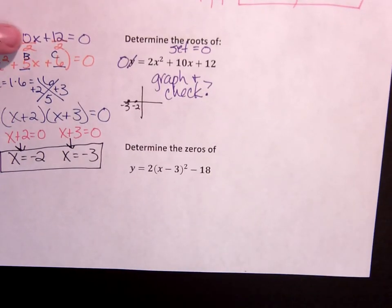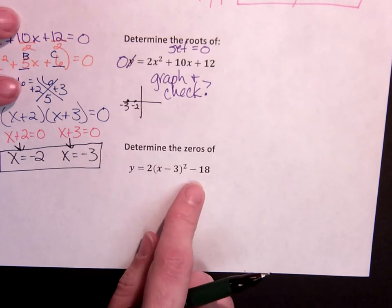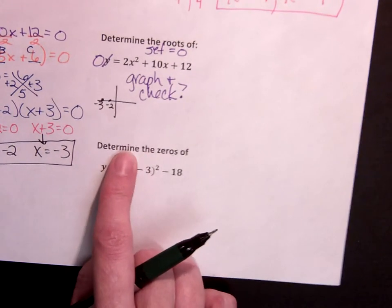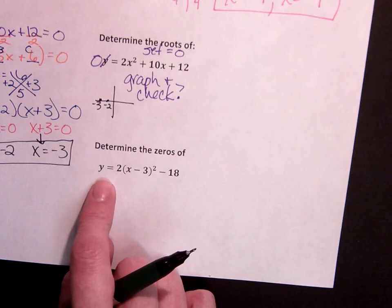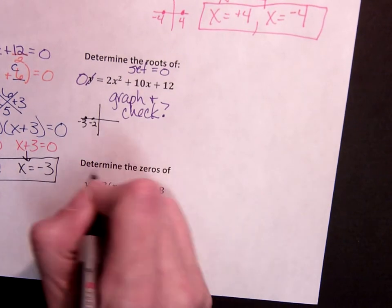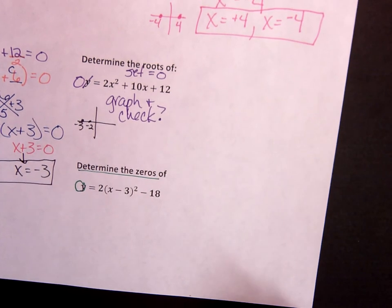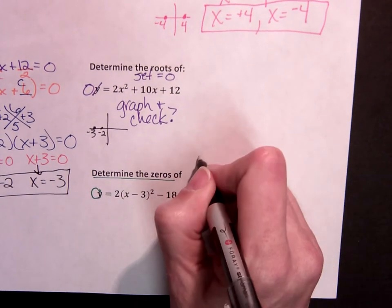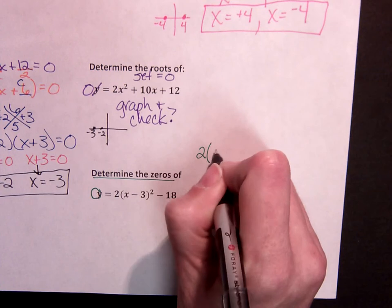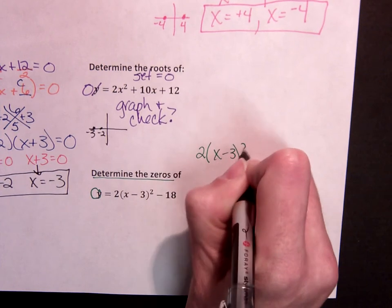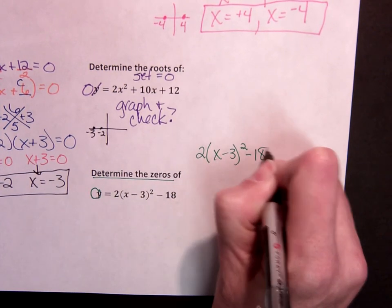So this one's written in vertex form, which we could multiply it out and get a b value. But it's going to be a lot simpler if we just solve using square roots.